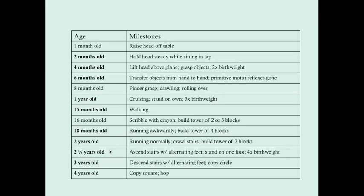Here's a list of motor milestones: copying a square and hopping are at age four. Also worth memorizing is the blocks milestone — two to three blocks at 16 months, four blocks at 18 months, and seven blocks at 24 months. This isn't something we really look at in the clinic since a lot of kids don't have blocks anymore, but it's good trivia for the test.